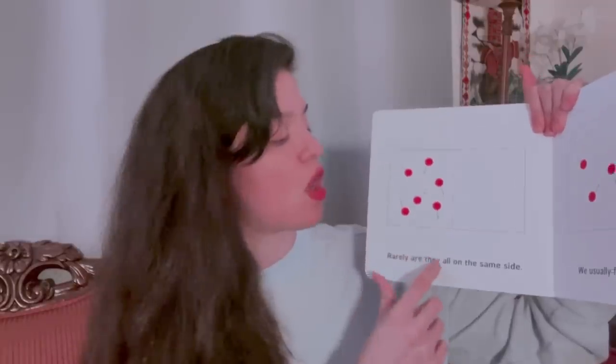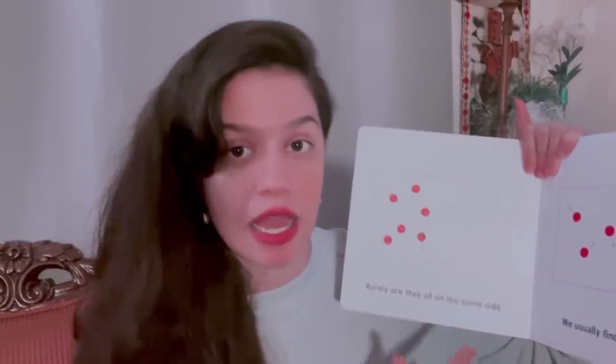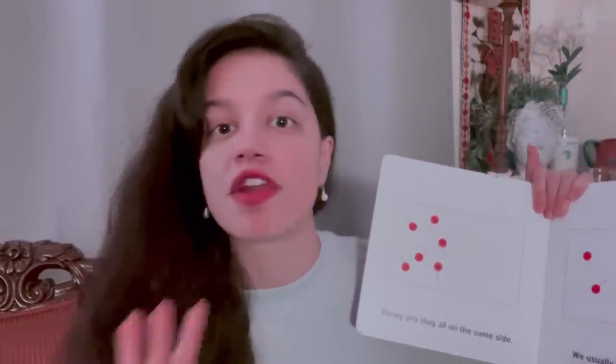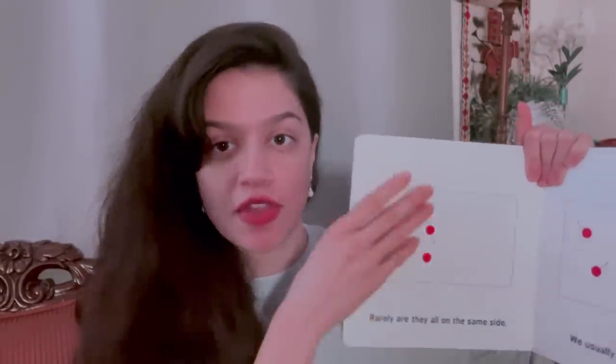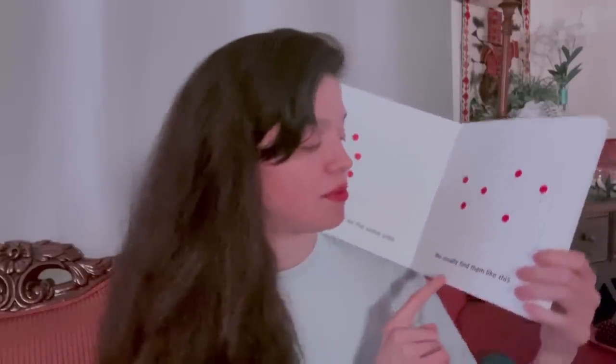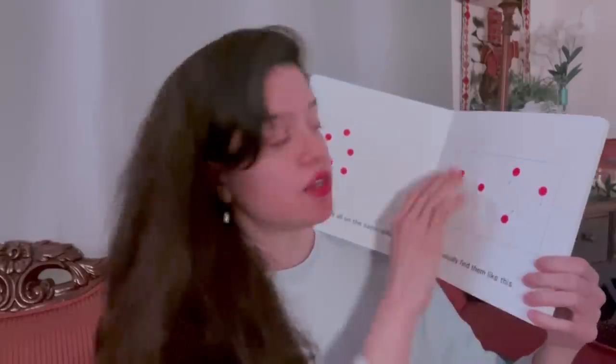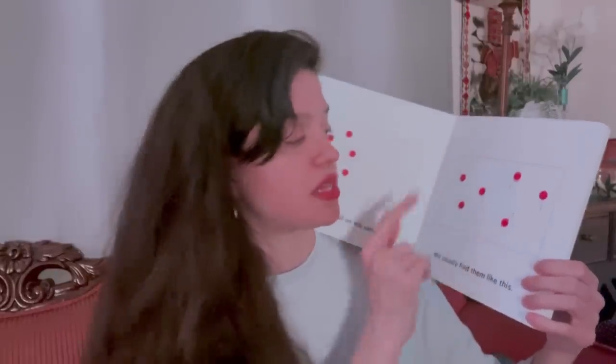Rarely are they all on the same side. It's very rare to find them all on the same side of the rectangle. We usually find them like this — three on this side or three on that side, all of them moving in different directions.